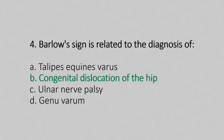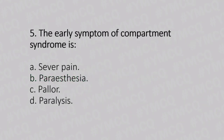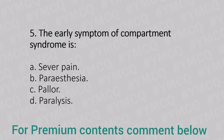Now let's move to question number 5. The early sign of compartment syndrome is. Option A: severe pain. Option B: paresthesia. Option C: pallor. Option D: paralysis. And the answer is Option A, severe pain.